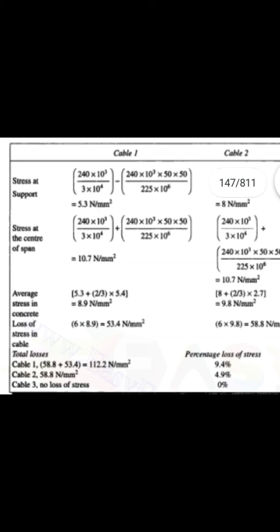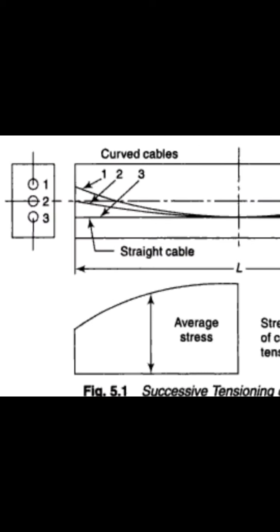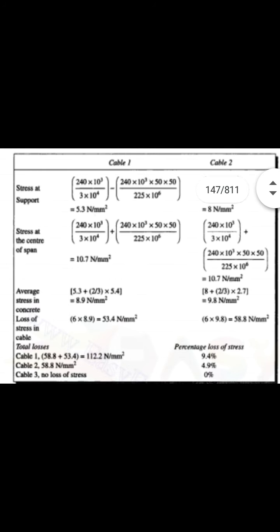For cable 2's losses: when cable 3 is tensioned, the loss occurs only in cables below it. Since cable 2 is above cable 3's influence, the loss applicable to cable 2 is only 58.8 N/mm². For cable 3 itself, since it is the last cable tensioned, there will be no loss due to elastic shortening from subsequent tensioning.